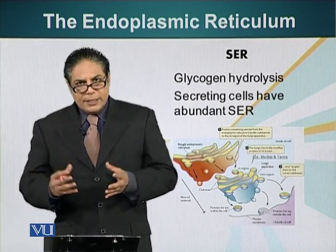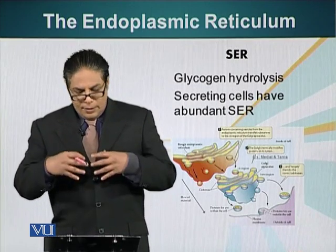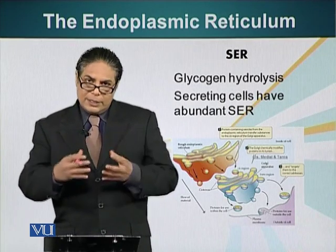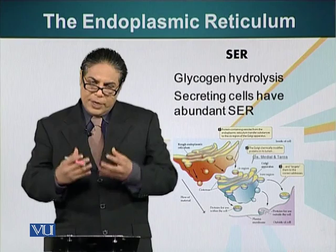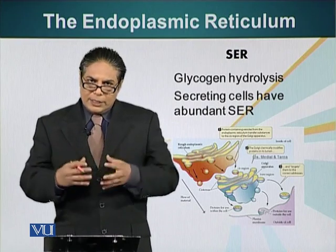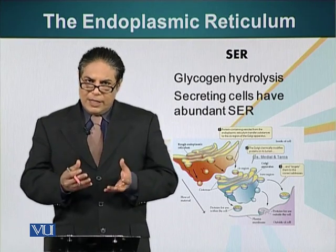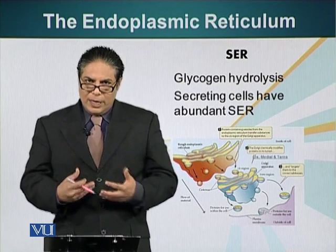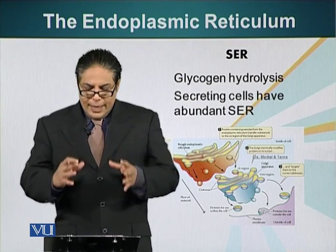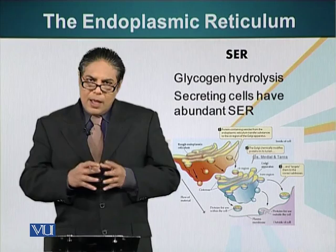Cells that are secreting — for example, cells that make and secrete antibodies, or cells that are secreting digestive enzymes for our digestive tract — they have abundant endoplasmic reticulum.